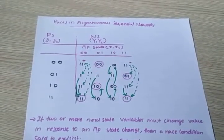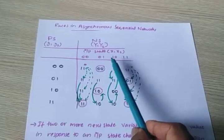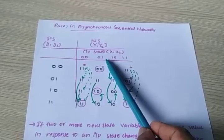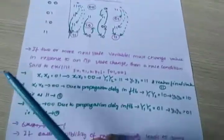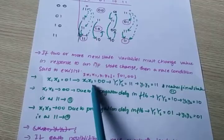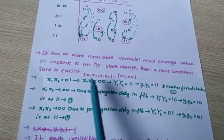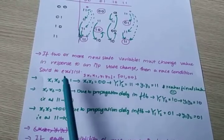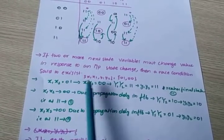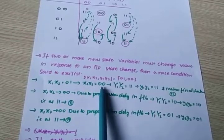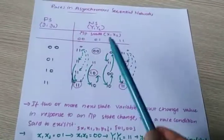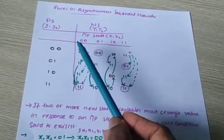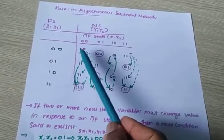Now, x1, x2 is 0, 1. I am changing x1, x2 from 0, 1 to 0, 0. What happens? At that time, what is y1, y2? It becomes 1, 1. The present state is 0, 0, input is now 0, 0, and the next state is 1, 1.